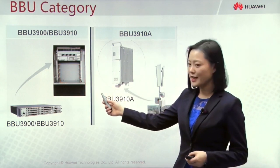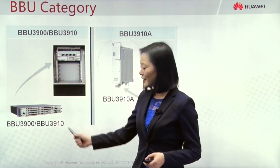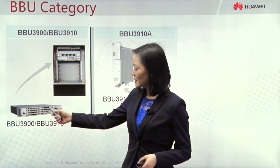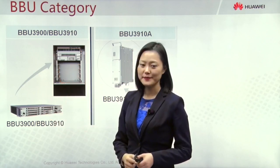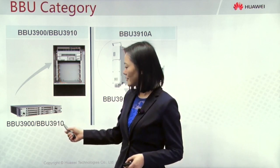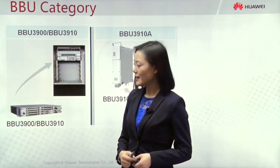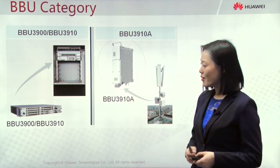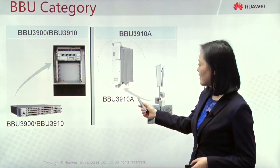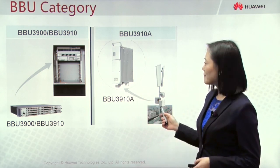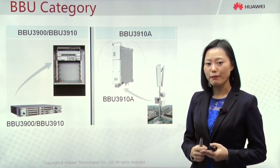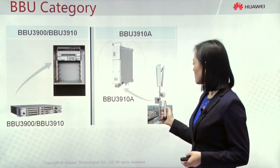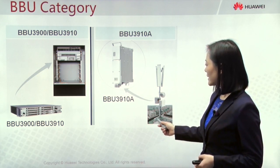There are three types of BBU: BBU-3900, BBU-3910, and BBU-3910A. BBU-3910 and BBU-3910A have the same appearance — a 1U/2U height box installed inside a cabinet. The difference is that BBU-3910 has better hardware processing ability; its backplane bandwidth switch capacity is doubled compared with BBU-3900, and it provides more and simpler interfaces. BBU-3910A is a new type called blade BBU. Together with blade RRU, blade power, and blade battery, it becomes the new blade site solution, with all modules installed on the tower — saving ground space with no cabinet needed.